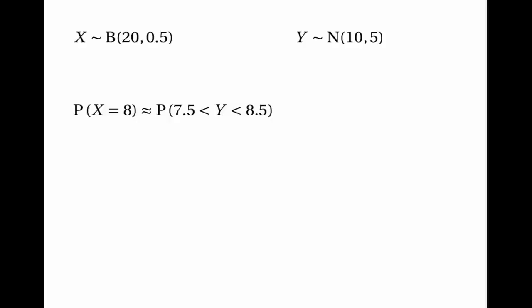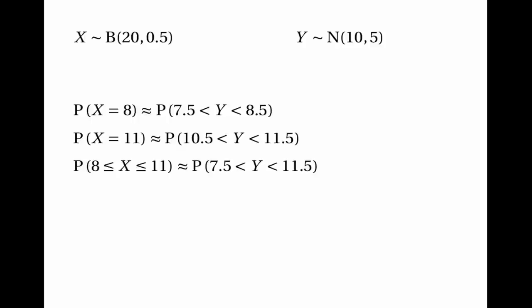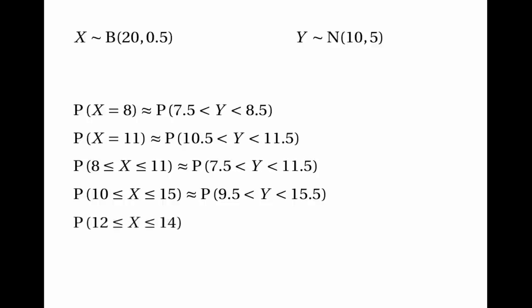To find P(x=8) you work out P(7.5 < y < 8.5). Similarly, for P(x=11) you find P(10.5 < y < 11.5). You always need a continuity correction when approximating a discrete random variable with a continuous one. For P(8 ≤ x ≤ 11) you find P(7.5 ≤ y ≤ 11.5), and for P(10 ≤ x ≤ 15) you find P(9.5 ≤ y ≤ 15.5). For P(12 ≤ x ≤ 14) the answer is P(11.5 ≤ y ≤ 14.5).